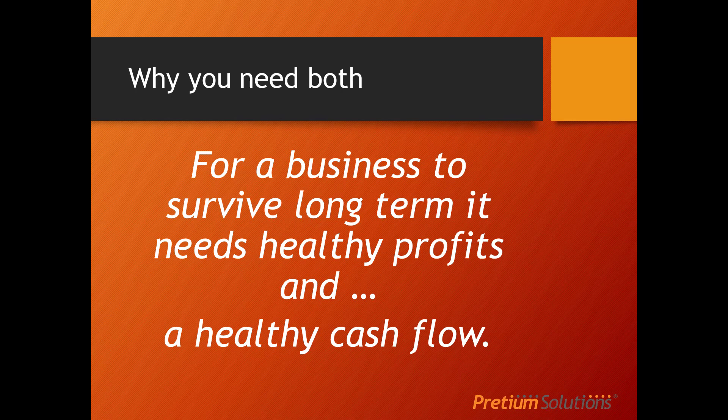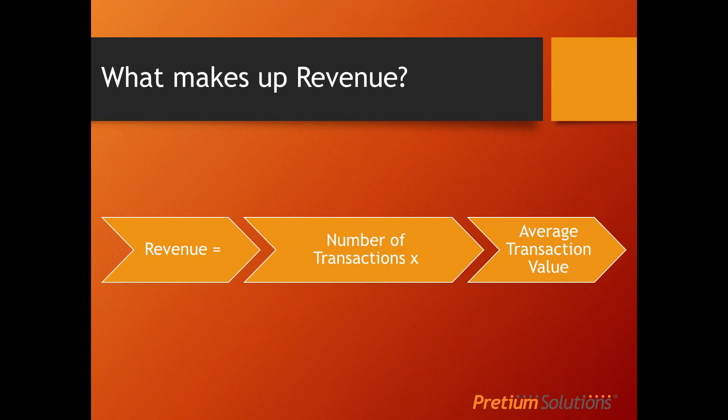So let's look at the components that make up profit, starting with revenue. Quite simply, revenue is the number of transactions or sales multiplied by the average value of those sales. The higher the number of transactions, the higher the revenue. Consequently, the higher the transaction value, the higher the revenue is going to be as well. These are two key things: to increase revenue we need to sell more, or sell at a higher rate.